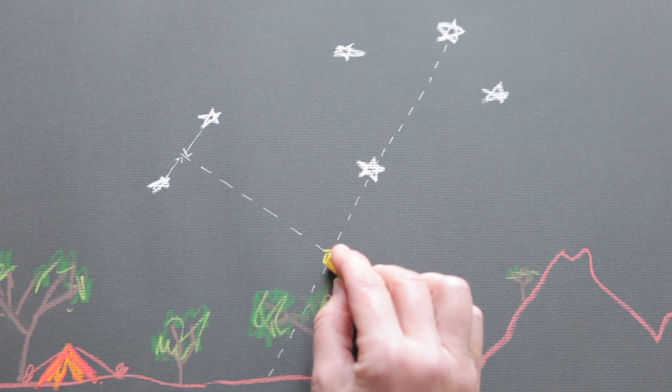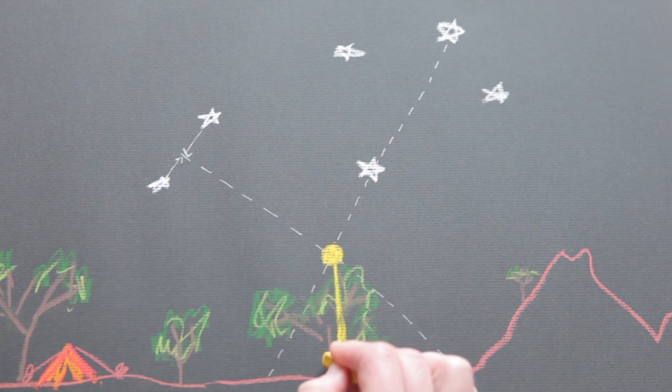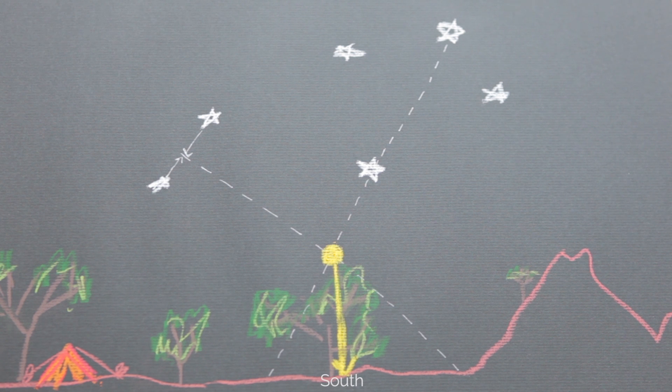And the magic sweet spot is where those two lines intersect. From that point, simply draw a line straight down to the ground, and that is how you find south with the Southern Cross. So easy!